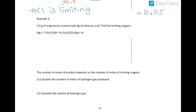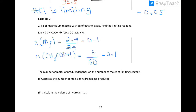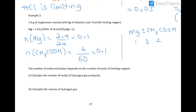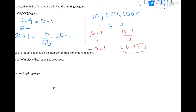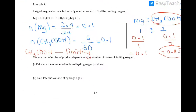In the second example, we again have the mass of both reagents. We find the number of moles by dividing mass by Mr for each. We then write the mole ratio of the two reactants and the number of moles of each — 0.1 and 0.1. It's a coincidence they're the same. Dividing by the mole ratio gives 0.1 and 0.05.